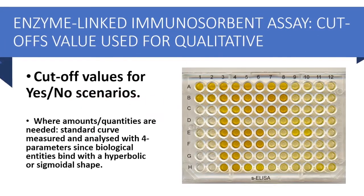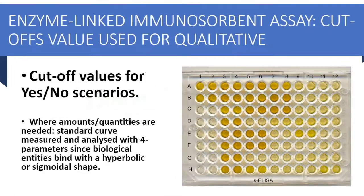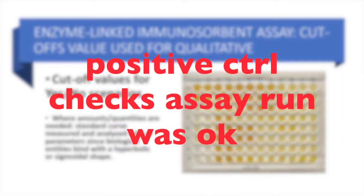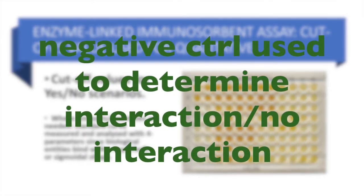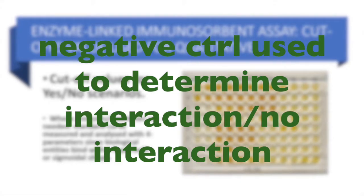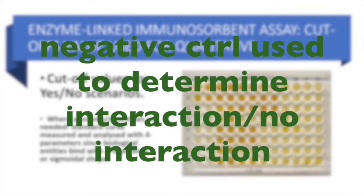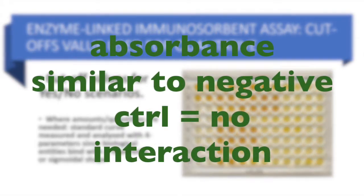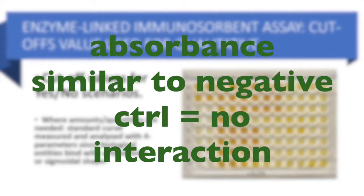In the simple cut-off analysis, you have a positive control and a negative control on the well. The positive control checks that the assay, the ELISA, worked as it should. The negative control is used to determine the cut-off value that will determine that an interaction has occurred. Anything below or at the negative control value will be considered no interaction between your ligand and your antibody or epitope.